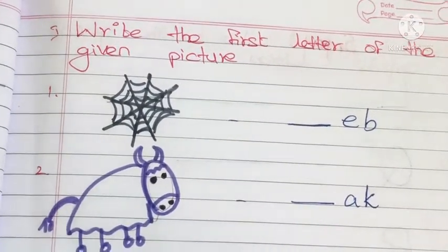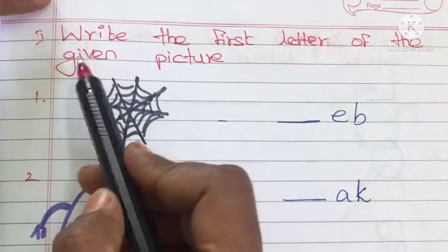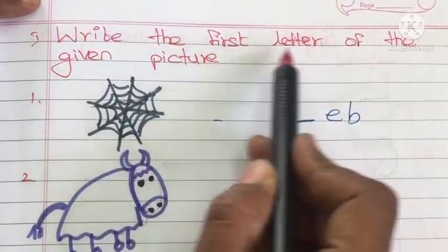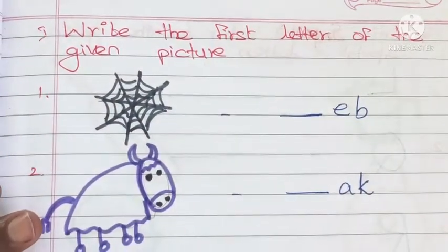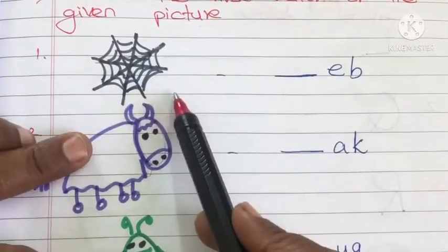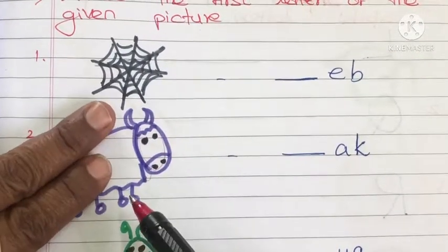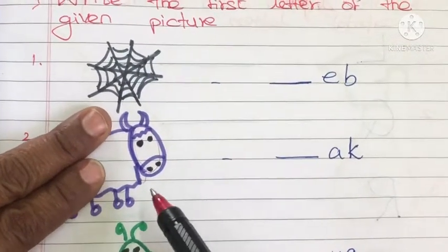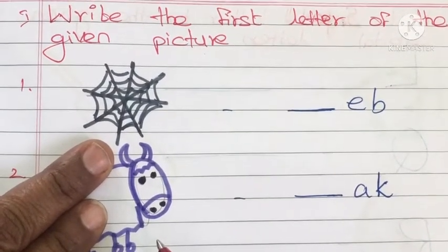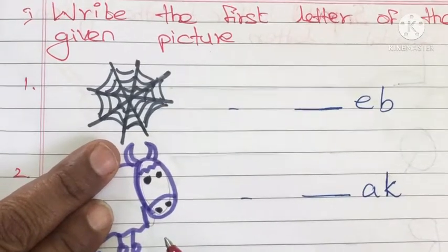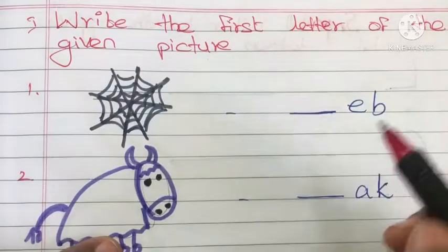Hi kids, today we are going to see English worksheets. The first exercise is: write the first letter of the given picture. Pictures are given and we have to write the first letter of the picture. What is the first picture? See and identify. It is a web. What is the first letter for web? Pronounce it: web. The first letter is W.